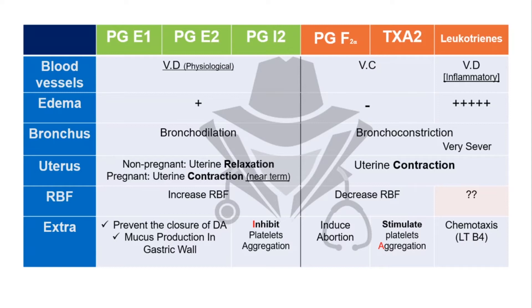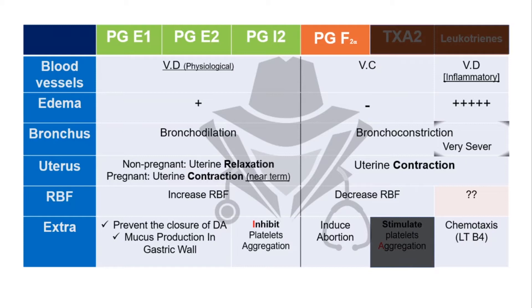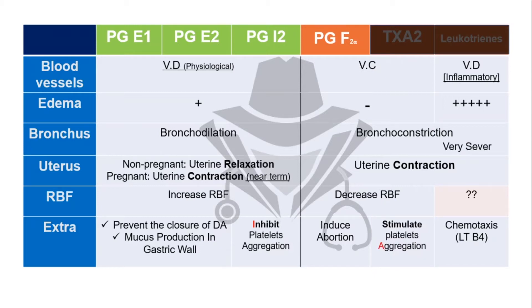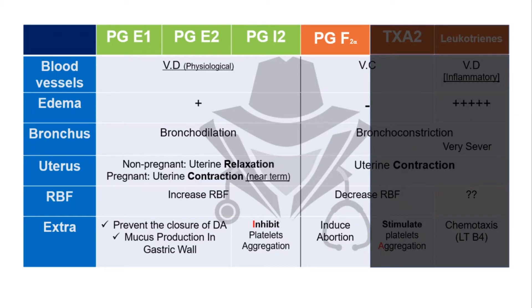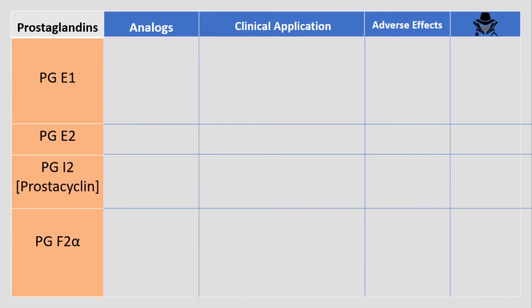We divided the prostaglandins into good prostaglandins in green and bad prostaglandins in red. Thromboxane A2 and leukotrienes can cause severe unwanted effects like platelet aggregation and severe bronchoconstriction. These metabolites only have inhibitors, but for prostaglandin E1, E2, I2, and F2 alpha, they do have pharmaceutical analogues.